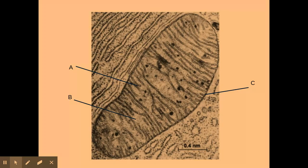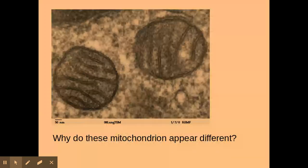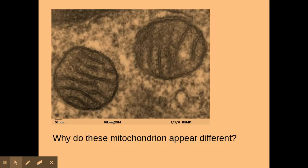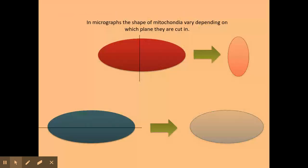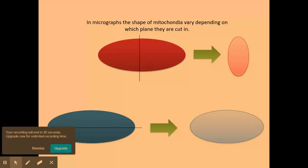Another very popular question here is why do these mitochondria appear different to the one on the previous slide. This is a really popular question, and the answer is because those microphotographs have been cut—the mitochondria have been cut along different planes, as you can see in this diagram here.